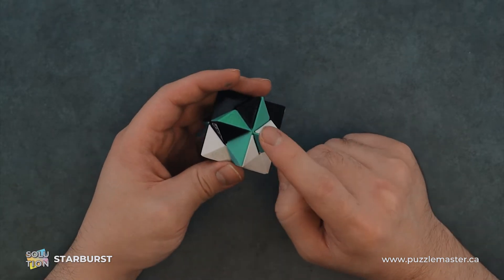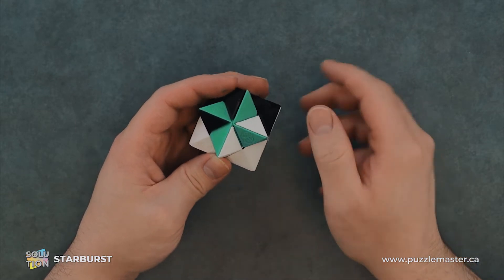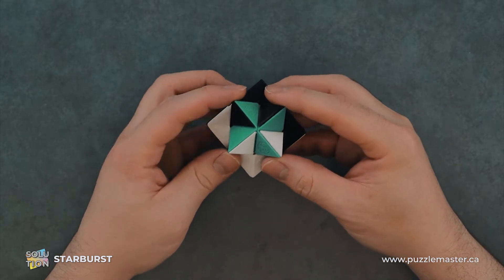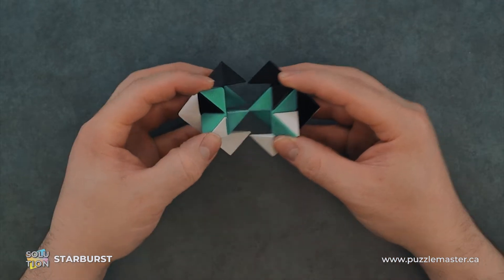So we're looking for the green side. We can see the majority of the pieces are green and there's a seam going through here. So we'll just grab the tips of the corners and pull it.